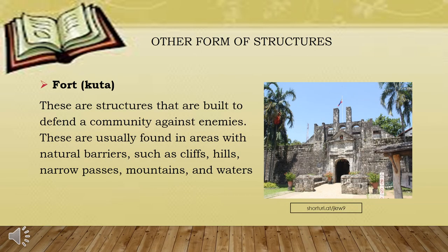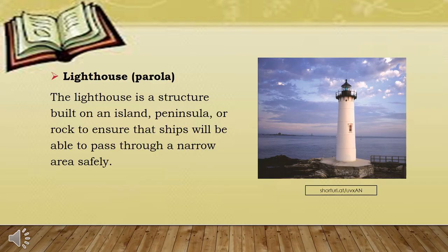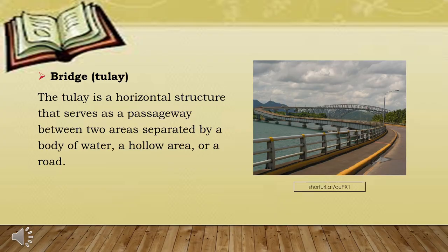Here are some other forms of structures. We have the fort or kuta. These are structures built to defend a community against enemies. These are usually found in areas with natural barriers such as cliffs, hills, narrow passes, mountains, and waters. Lighthouse or parola. The lighthouse is a structure built on an island, peninsula, or rock to ensure that ships will be able to pass through a narrow area safely. Last but not the least is the bridge or tulay. The tulay is a horizontal structure that serves as a passageway between two areas separated by a body of water, a hollow area, or a road.